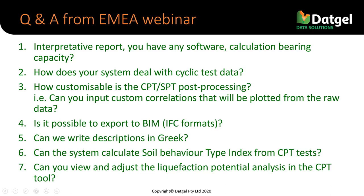A question about how the system deals with cyclic test data: it depends which type of cyclic test you mean, but probably not amazingly well. We're not trying to calculate cyclic tests in our lab testing code at this point — that's another level. However, some tables in the system do support the Orsted AGS4-plus format, which must support some cyclic tests, but I'd have to look at the exact details.